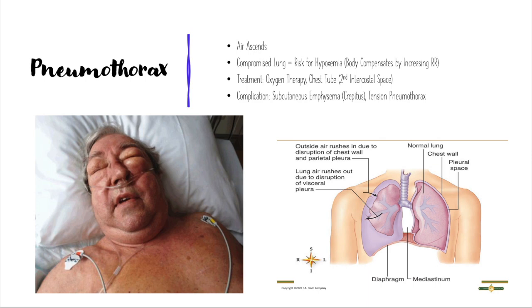Here's a close-up of a pneumothorax. Looking at the right lung — the punctured lung in this picture — we see that air is escaping, and due to air being very light, it ascends upward. As a result of the lung being punctured, there will be decreased oxygen within circulation, and the body will recognize this loss of oxygen and compensate by increasing the respiratory rate, which is termed tachypnea.